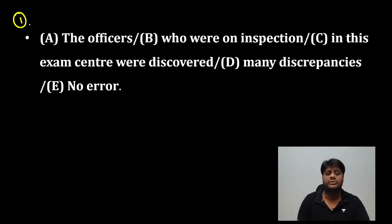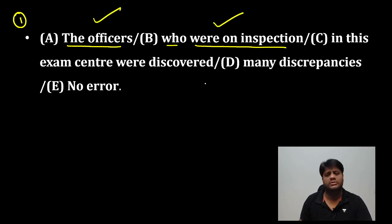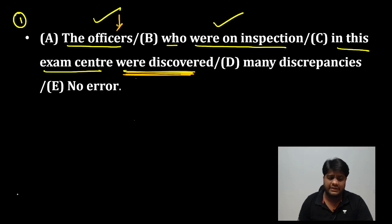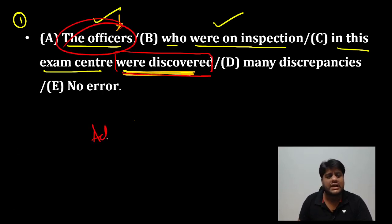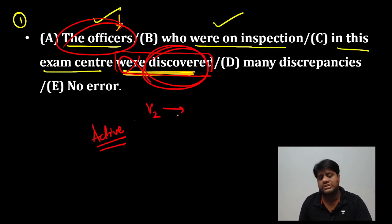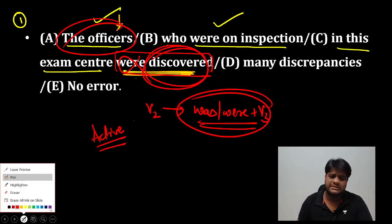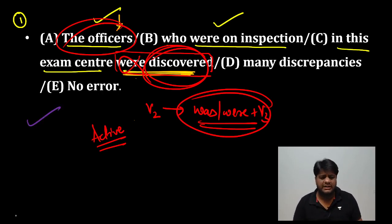Just have a look. पहला question है — 'The officers who were on inspection in this exam center were discovered.' अगर आपने यहाँ पर 'discovered' लगाया तो आपका मतलब है officers discovered हो गए। यहाँ पर उन्होंने action किया — यह action has been done by officers, तो voice active रहेगी। इसलिए 'was discovered' नहीं, अकेला 'discovered' आएगा — was के साथ verb की third form नहीं।